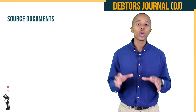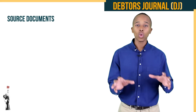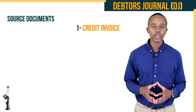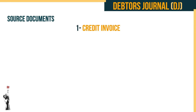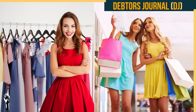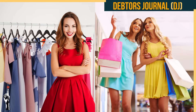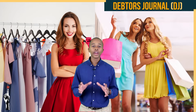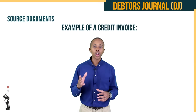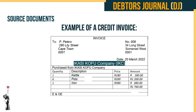Today we will be looking at the debtor's journal, or DJ, and the source documents used in accordance with it. The first document is the credit invoice. The original invoice goes to the client that bought the goods on credit from our business, and the duplicate is kept by the business that sold the goods to the client.